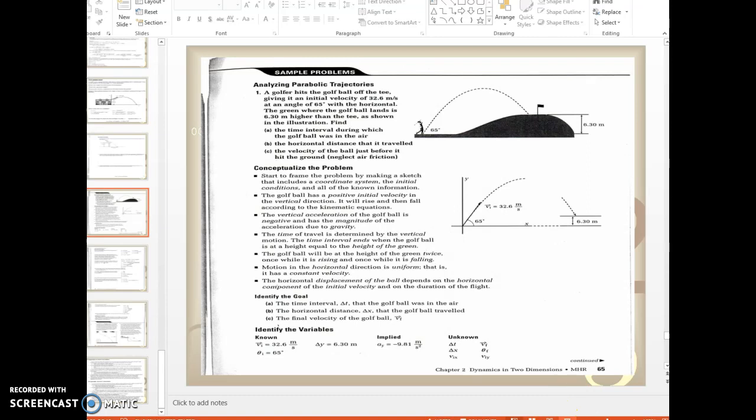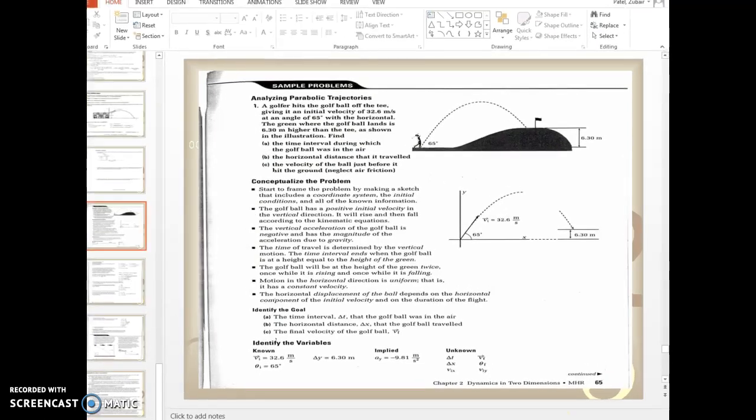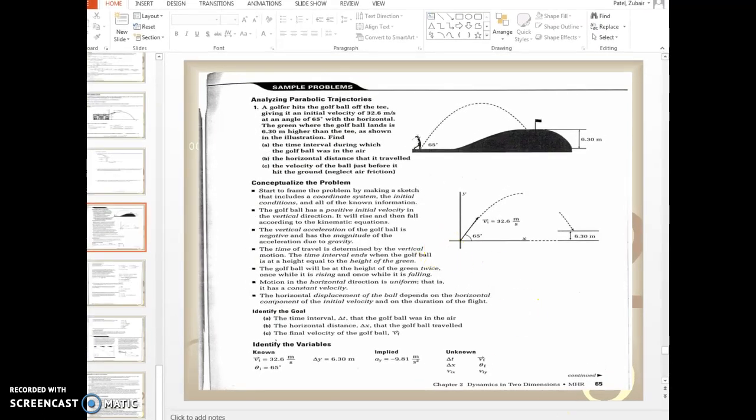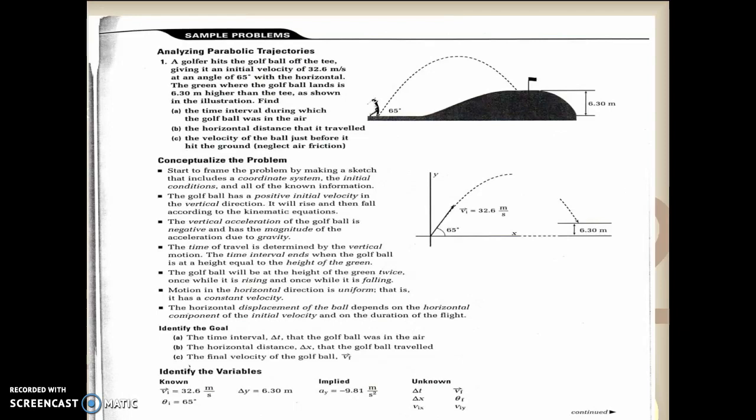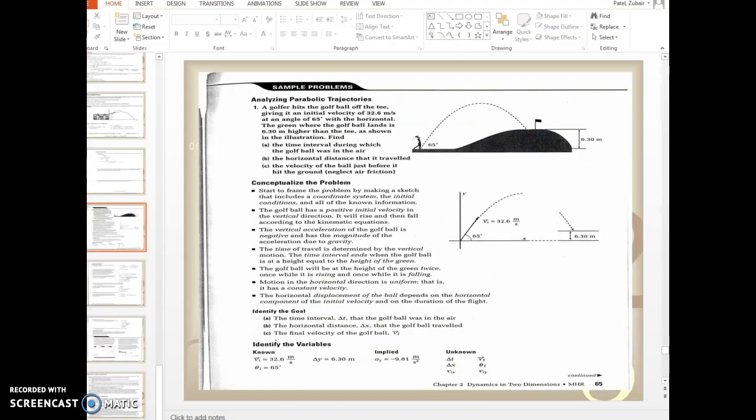This is the question that we have. This is what it looks like. The golfer hits the golf ball off the tee, giving it an initial velocity of 32.6 meters per second at an angle of 65 degrees with the horizontal. The green, where the golf ball lands, is 6.3 meters higher than the tee. Find the time interval, the horizontal distance, and the velocity of the ball just before it hits the ground. Okay, so that's the question that we're going to do.